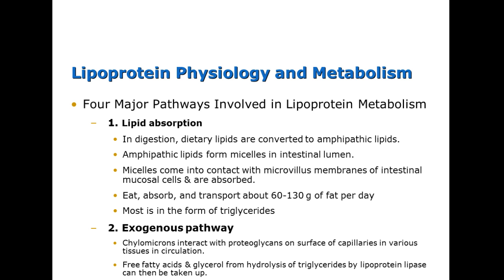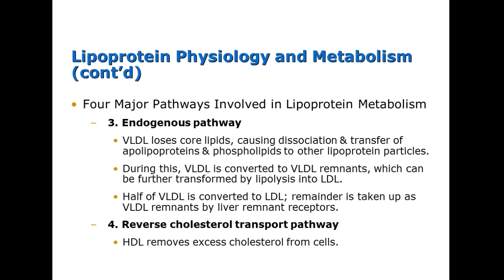In the exogenous pathway, chylomicrons interact with proteoglycans on the surface of capillaries and various tissues. Free fatty acids and glycerol from hydrolysis of triglycerides by lipoprotein lipase are taken up for use by the cell. Then VLDL loses core lipids, causing dissociation and transfer of apolipoproteins and phospholipids to other lipoprotein particles, and the VLDL is converted to VLDL remnants, which can be further transformed into LDL. Only about half of VLDL is converted to LDL; the remainder is taken up by liver remnant receptors.